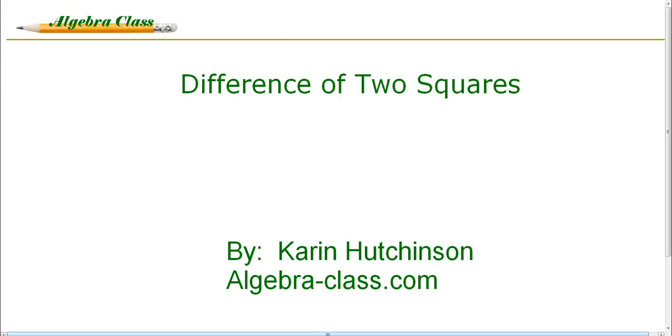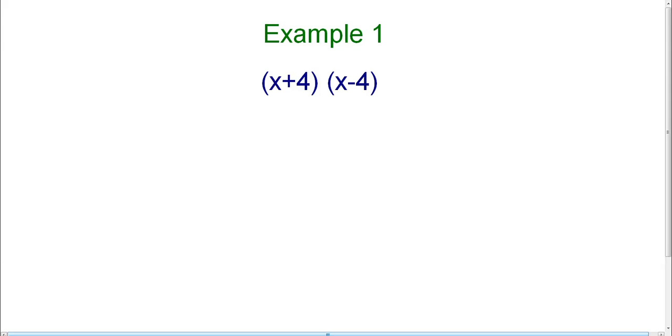We're going to be talking about a special type of multiplication problem involving binomials. When you multiply two binomials that only differ by their sign, this is called the difference of two squares. It's a special formula that we can use to multiply these two binomials without having to use FOIL or another method. This only works when you have two binomials that are exactly the same except for the sign.